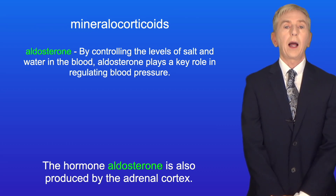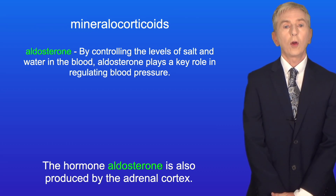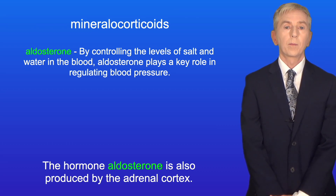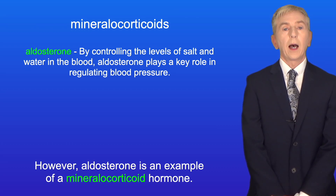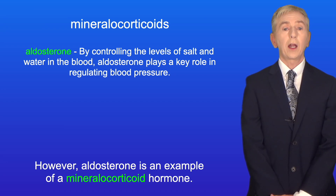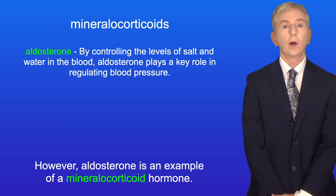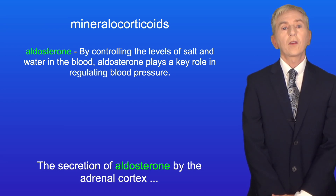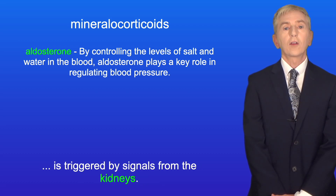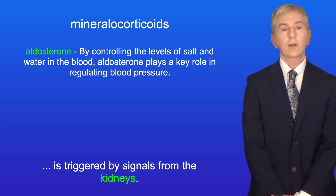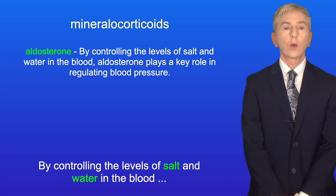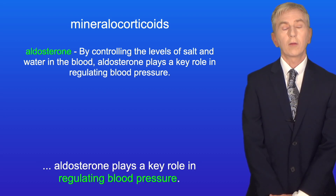The hormone aldosterone is also produced by the adrenal cortex. However, aldosterone is an example of a mineralocorticoid hormone, and the secretion of aldosterone by the adrenal cortex is triggered by signals from the kidneys. By controlling the levels of salt and water in the blood, aldosterone plays a key role in regulating blood pressure.